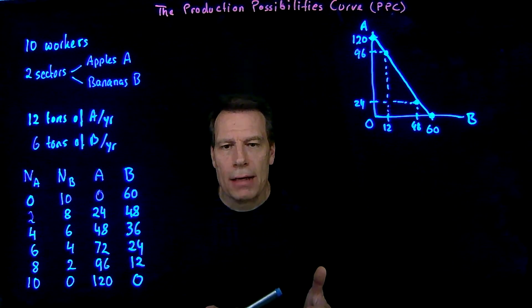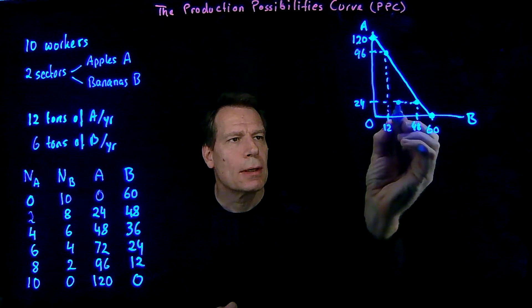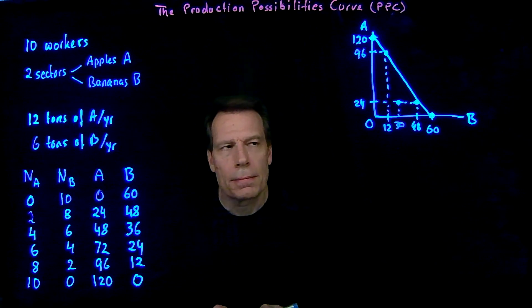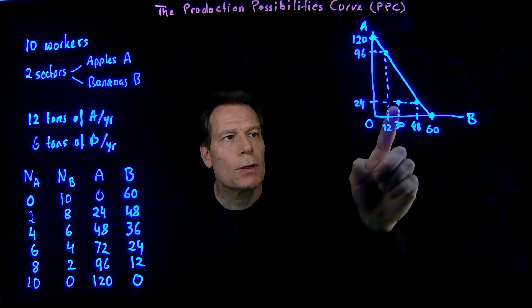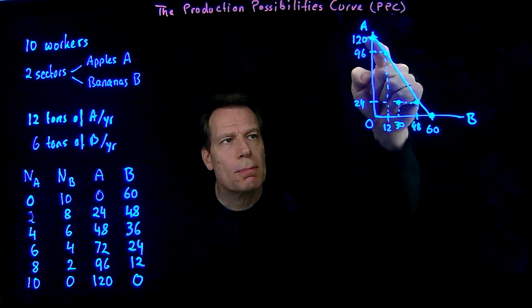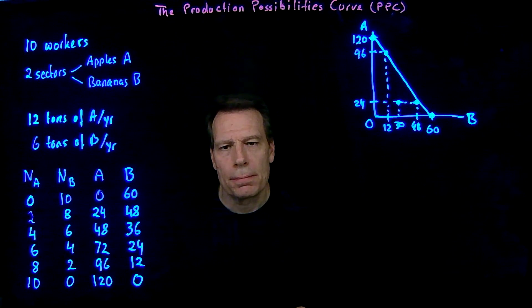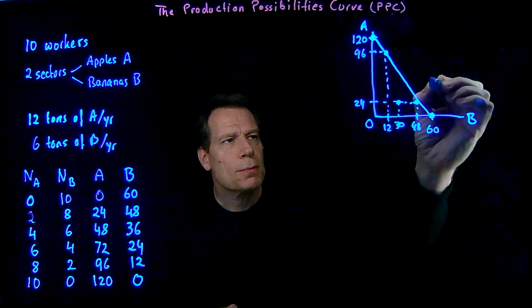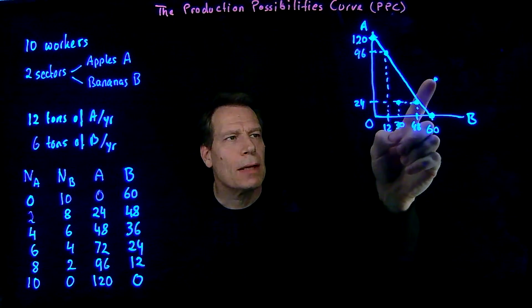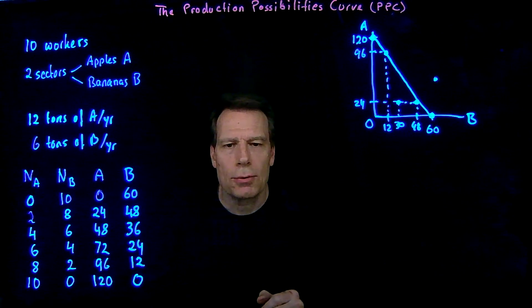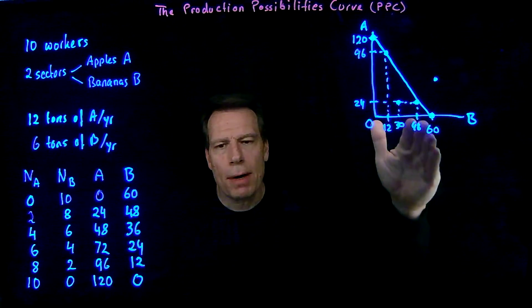Now, there are other possible production possibilities in this economy. We could, for example, produce a point where we produce 24 apples and maybe 30 bananas. But if we produced at that point, we're not fully utilizing all the resources in the economy — we could produce more of everything. The production possibilities curve tells us all the production possibilities if all resources are fully employed. What we couldn't do is produce points outside of the curve; if we tried, we would attempt something literally not possible for this economy, as it simply doesn't have enough resources to reach that point.